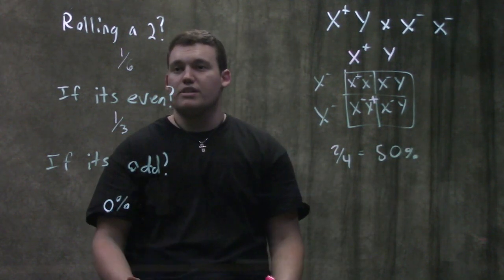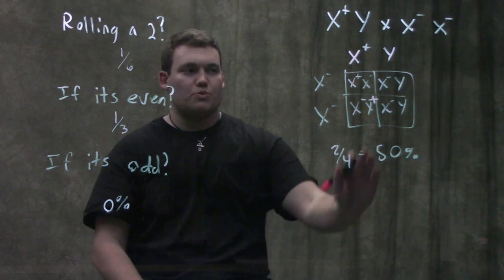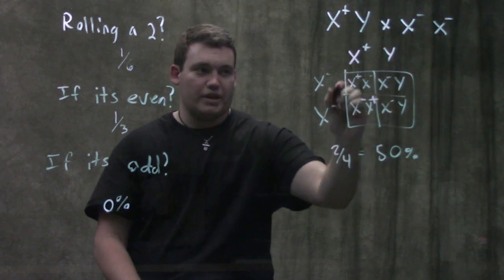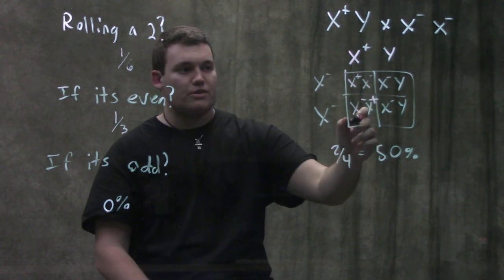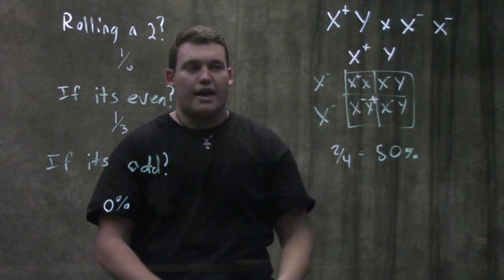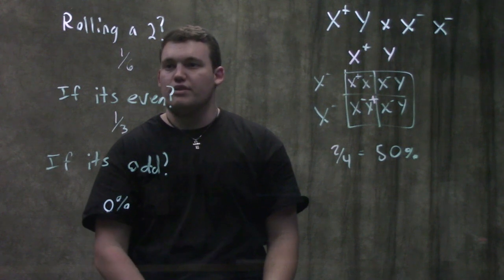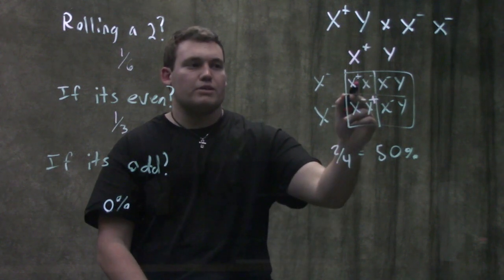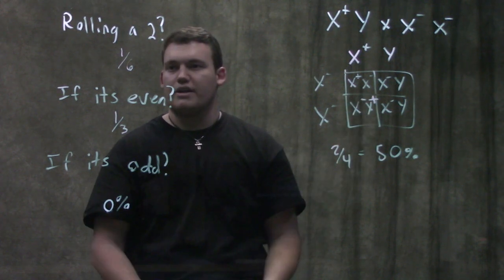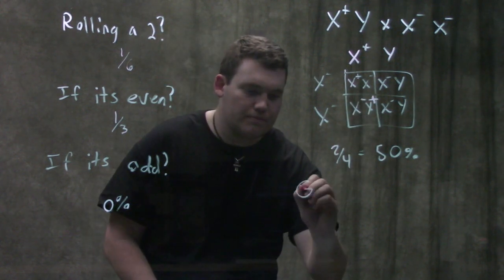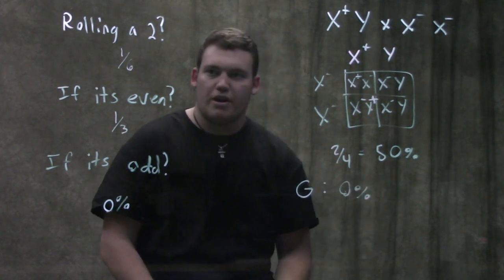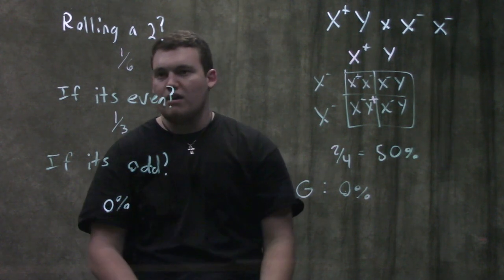Now what if I told you it's a girl? We know it's a girl, so we cut out the boy possibilities and only look at the girl section. We've got two possibilities: X-plus X-minus — not colorblind, because it has that dominant allele — and X-plus X-minus — not colorblind, because it also has the dominant allele. So for a girl, we have a zero percent chance of being colorblind.